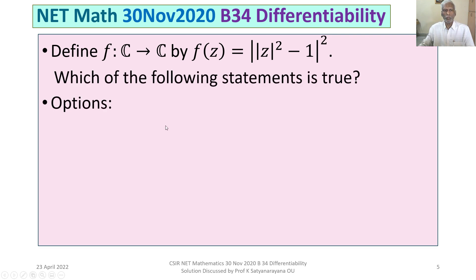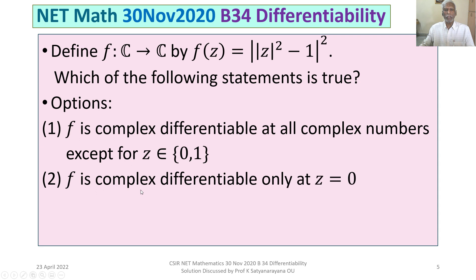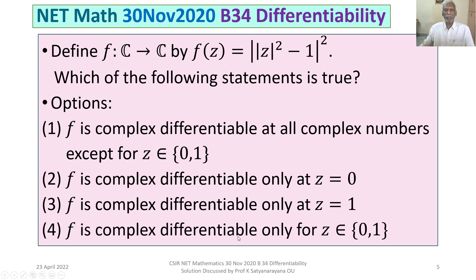Which of the following statements is true? The four options are: Option 1 — f is complex differentiable at all complex numbers except for z in the set {0, 1}. Option 2 — f is complex differentiable only at z = 0. Option 3 — f is complex differentiable only at z = 1. Option 4 — f is complex differentiable only for z in the set {0, 1}.